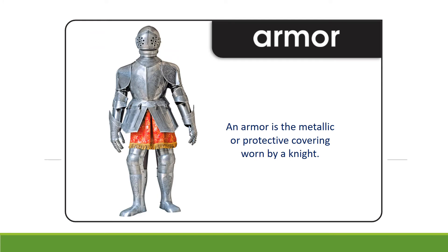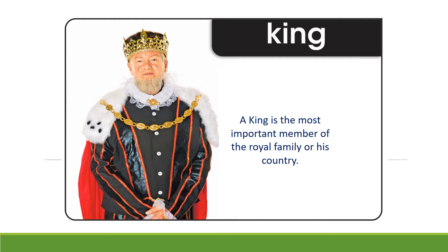Armour. An armour is a metallic or protective covering worn by a knight. Repeat. Armour. King. A king is the most important member of the royal family of his country. Repeat. King.